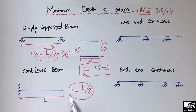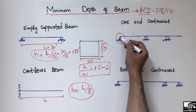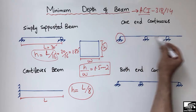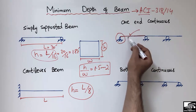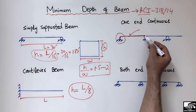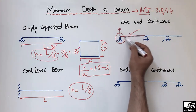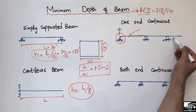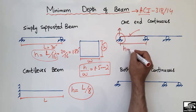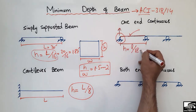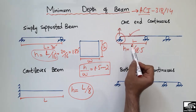For a one-end continuous beam — where one end is a pin support and the other end passes through multiple supports — the minimum depth of the beam should be equal to L/18.5. This type of beam is called a one-end continuous beam because one end is simply supported while the other end is continuous over several supports. Dividing the span by 18.5 gives the minimum depth, and we should not provide less than this.